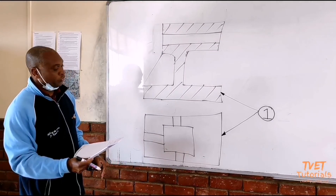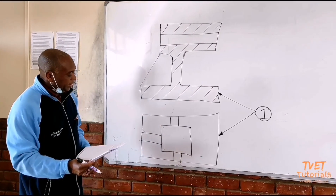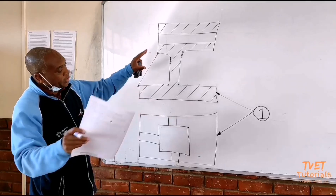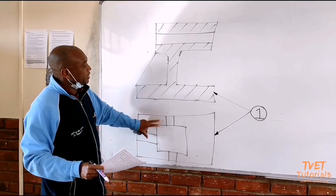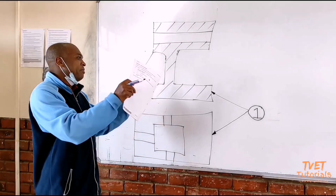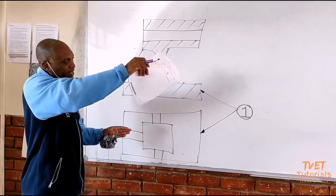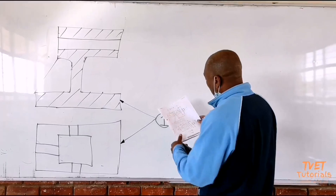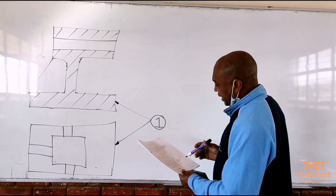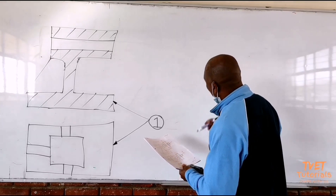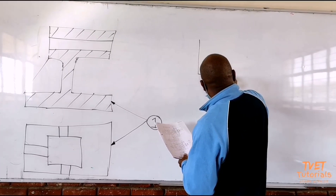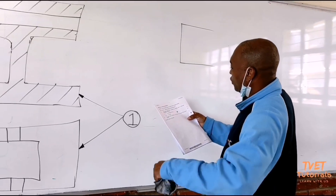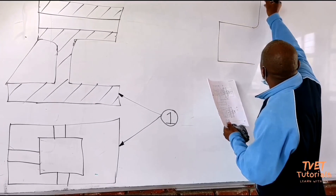Now for question 4.2, we draw item number two. We must remove it so that item number two, when you draw it, must be away from this drawing — a minimum distance of 15mm away from one view to another. We check by drawing again — we want item number two. You just trace it in the same shape, and the question requires a half section with the top half in section.